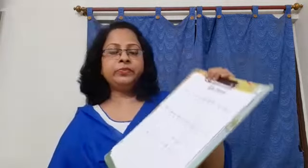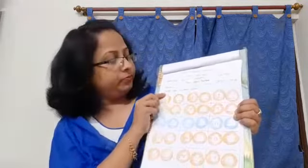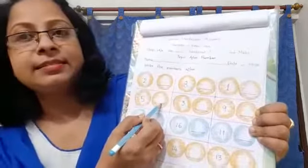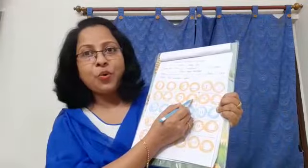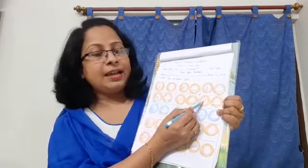You will do it accordingly. After learning this, we will do one worksheet. Write it. Write the numbers after. What will be the after number of 2? 8. What will be the after number? 9. 1, 2, 5, 6, 3, 4, 9, 10. You have to do it in this way.